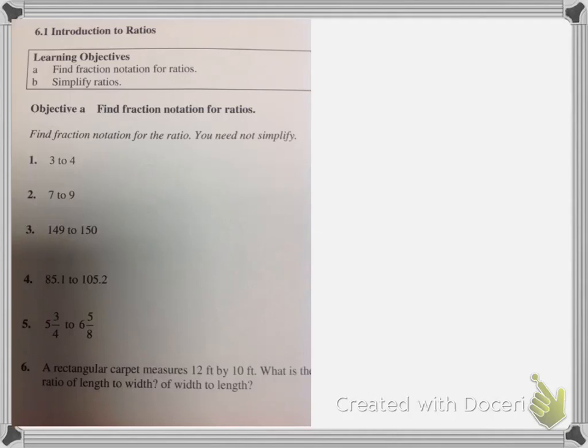Another way to write a ratio is to write it with a colon. So we could say 3 to 4 with the little word 2 in between, or we could say 3 colon 4, or we could write it as a fraction 3 to 4.